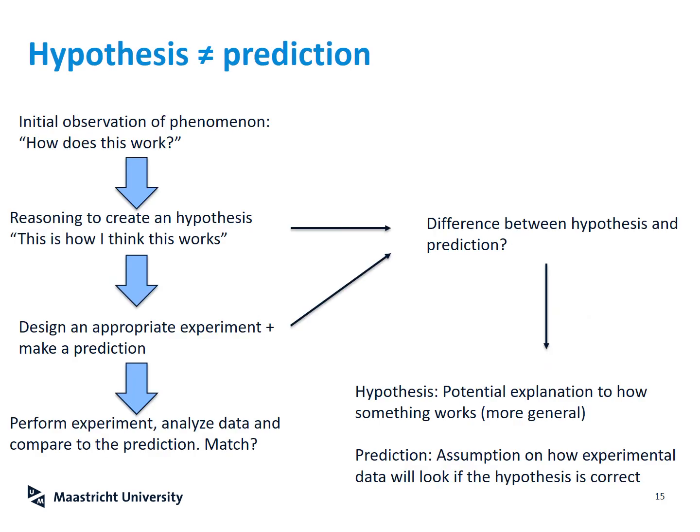The difference between a hypothesis and a prediction can sometimes be difficult to grasp. In the normal, non-statistical scientific method, a hypothesis is a potential explanation of how something works — it's more general. A prediction, by contrast, assumes your hypothesis is correct: given that, what will the experimental data look like? That is the key difference. It can be especially difficult to distinguish the two in statistical analysis, but in the more factual, general approach there is a clear difference between hypothesis and prediction.